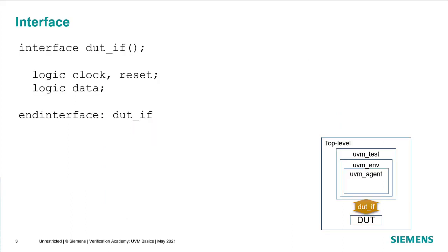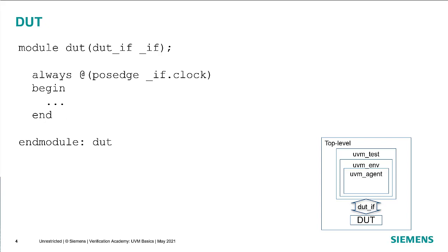When we look at our interface, we see a number of signals inside of the interface — in this case, clock, reset, and data. Interfaces are typically more complex than this, but we're going to use this as our example. The DUT itself has a port connection of type DUT-IF, and inside of the DUT it will refer to signals inside of the interface, in this case IF.clock. The DUT may actually just be a wrapper that uses the interface as the port and connects to another DUT inside of it that has signal-level port connections. But for this example, we'll just worry about connecting through the interface itself.